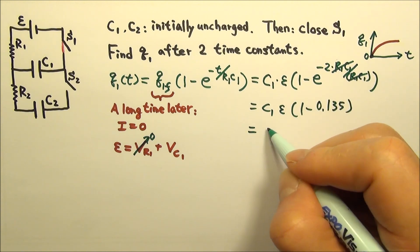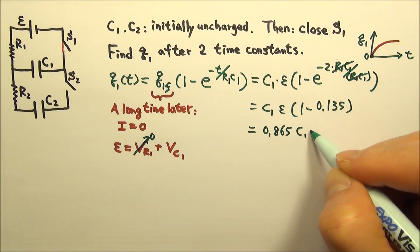And we get C1e times 1 minus e to the negative 2 is 0.135. Therefore, this gives us 0.865 C1 times e.